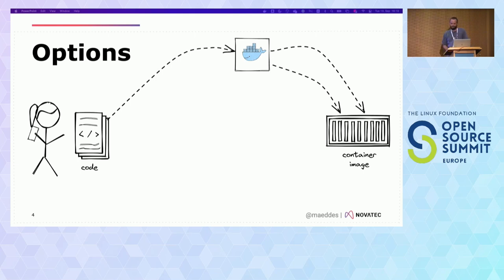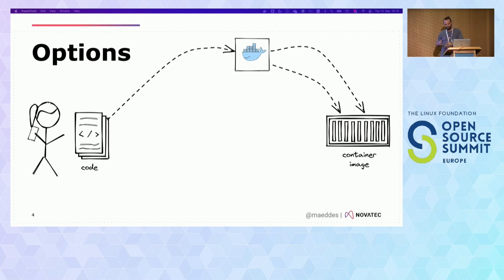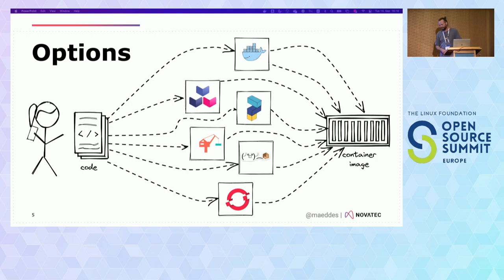It's difficult to talk about containers without talking about Docker. The initial way most people get to building a container is through a Dockerfile, and I'll use that as a reference — what can you do with it, what might be good or bad — and then look at other technologies including Cloud Native Buildpacks and Paketo, an open source project from Google called Jib, and maybe a few words about OpenShift Source to Image.